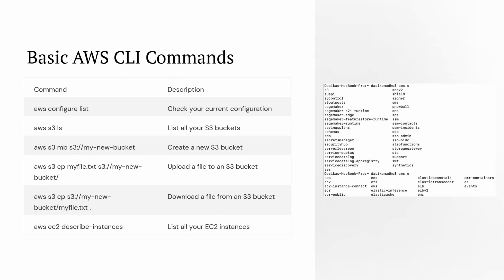Now we will see basic AWS CLI commands. To check your current configuration, use 'aws configure list'. To list all your S3 buckets, use 'aws s3 ls'. To create a new S3 bucket, use 'aws s3 mb' followed by the bucket name. To upload a file to an S3 bucket, use 'aws s3 cp' followed by the file name and the bucket name.